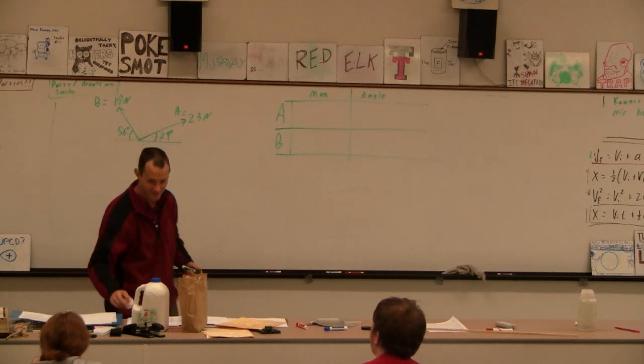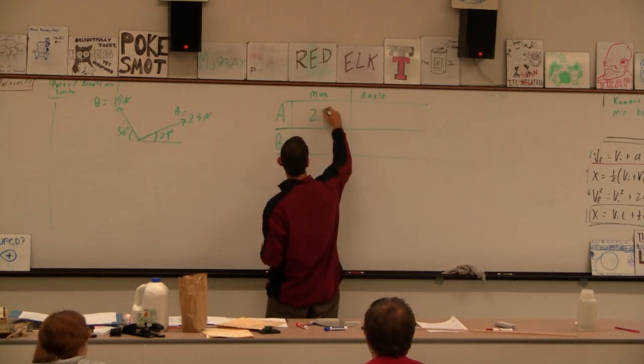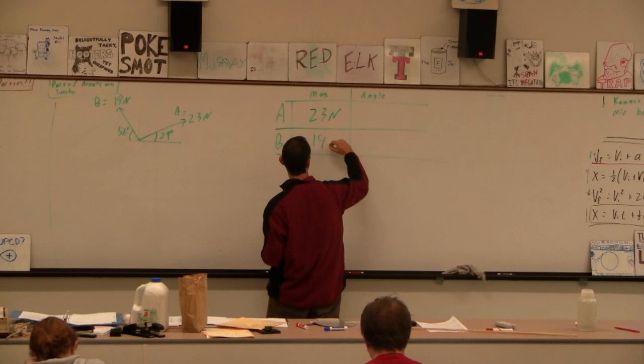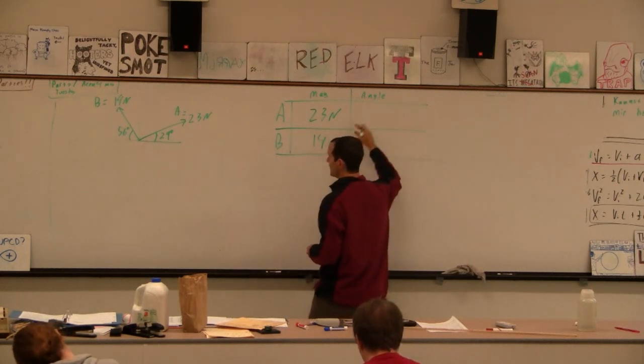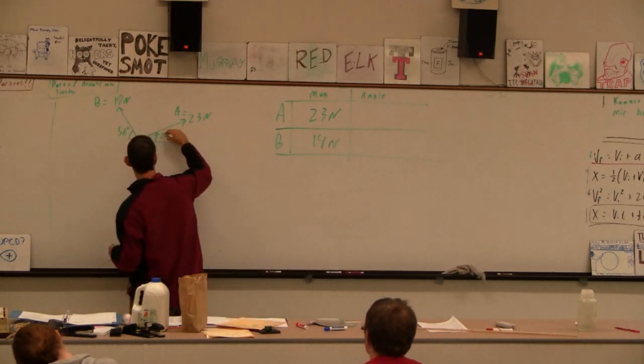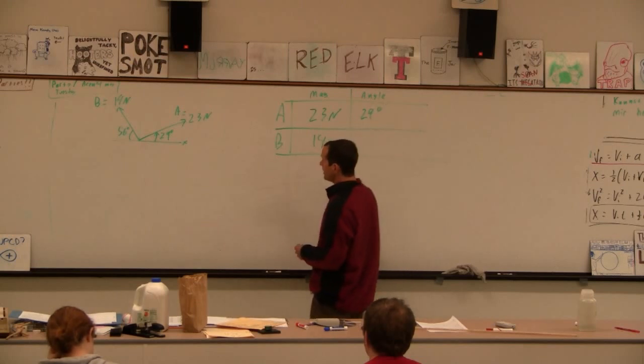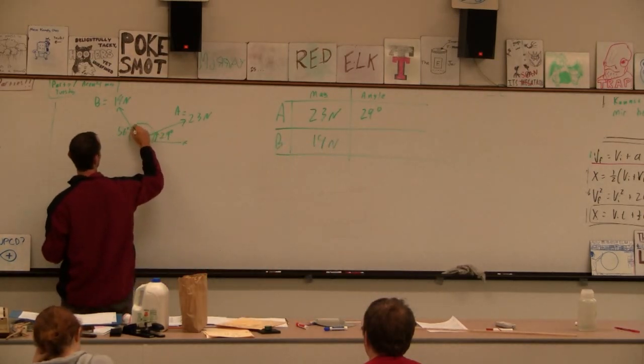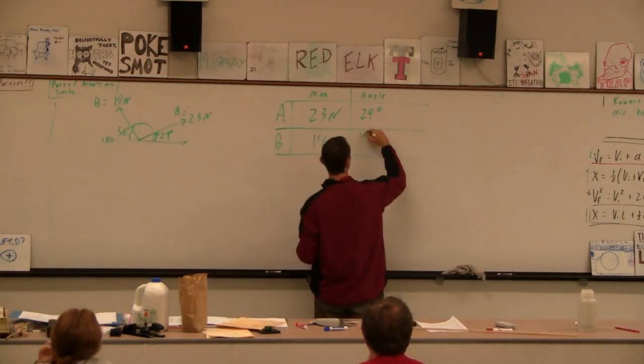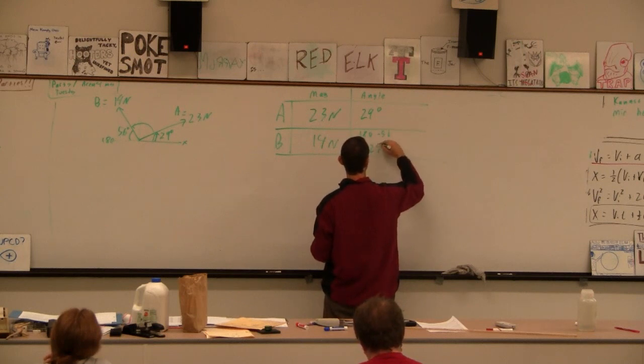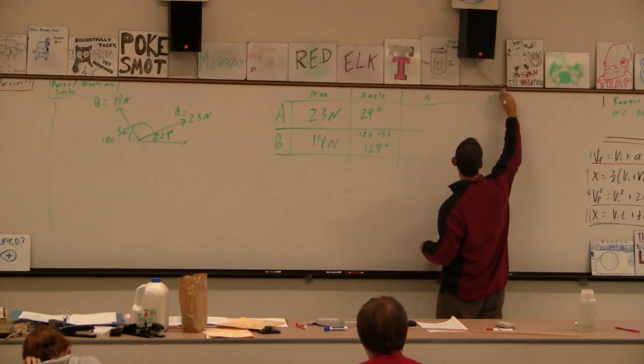The magnitude of A is 23 newtons, magnitude of B is 14 newtons. For angle here we really want the trig angle, so A is the trig angle, this is anti-clockwise from the x-axis, so A is 29 degrees. B is going to be, this is 180, so that's going to be 180 minus 56, that's 124. So now we're good. Now we're going to find the x component and the y component.